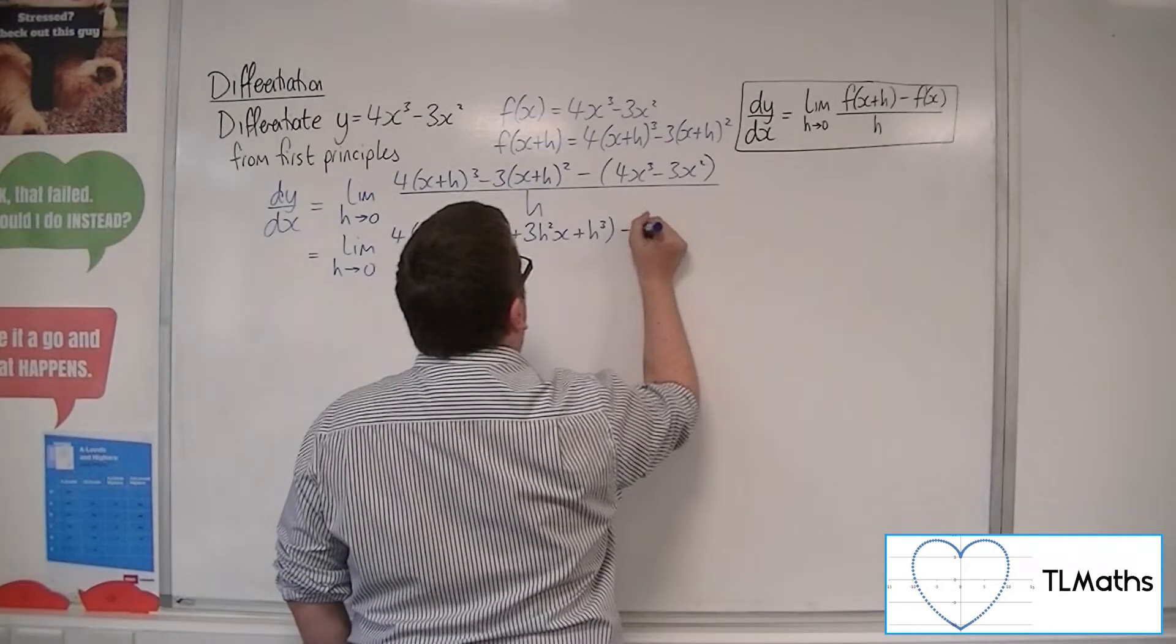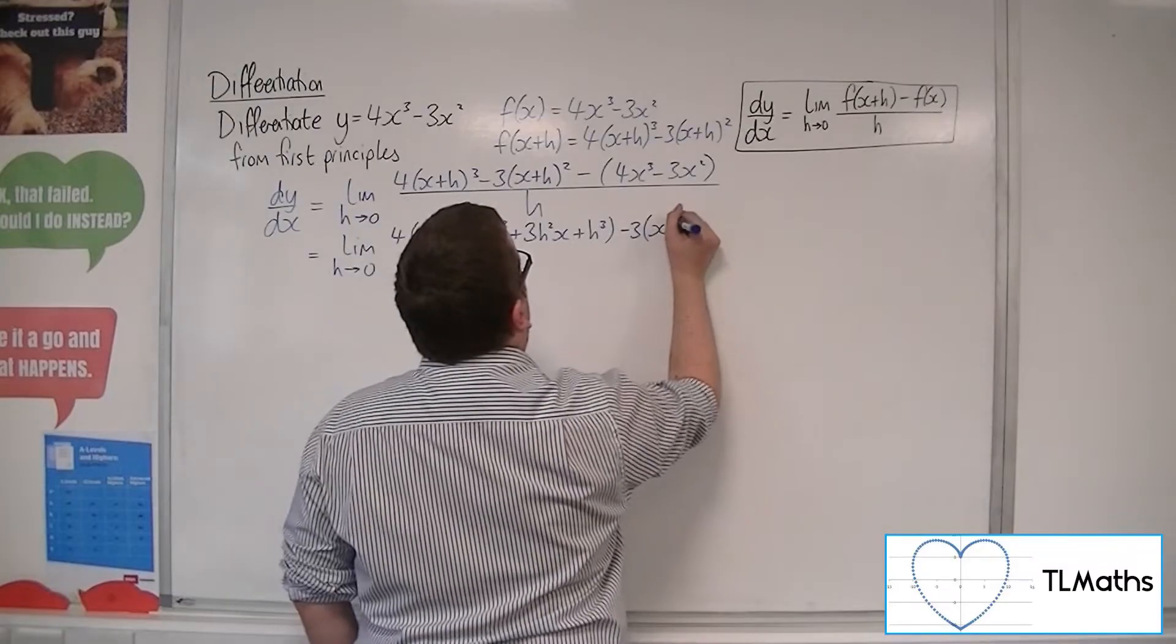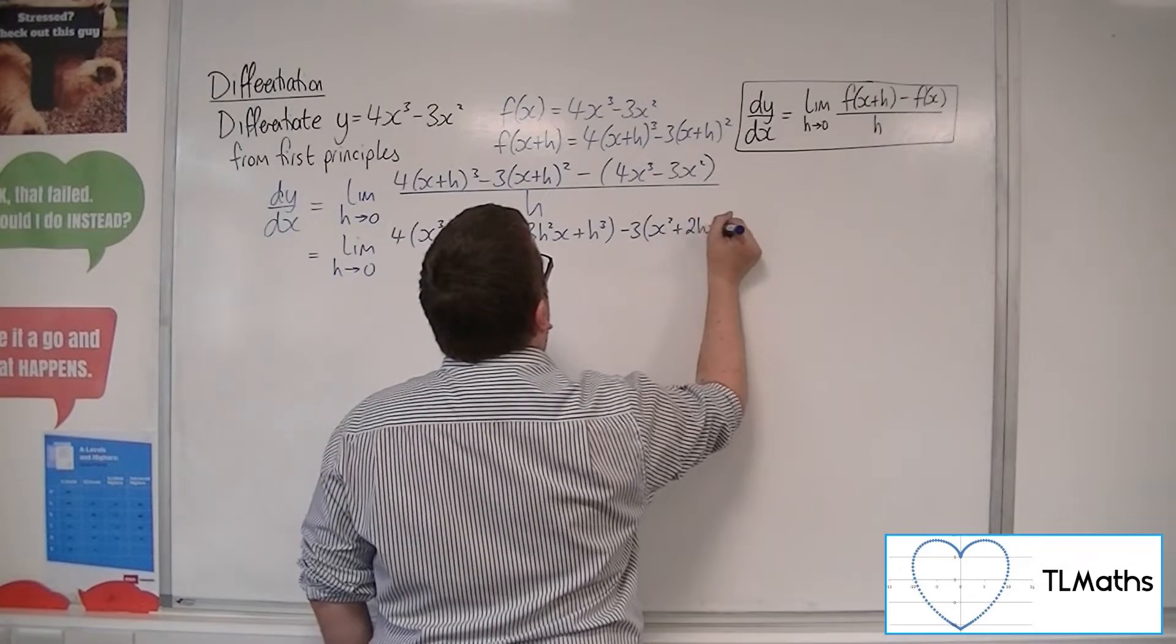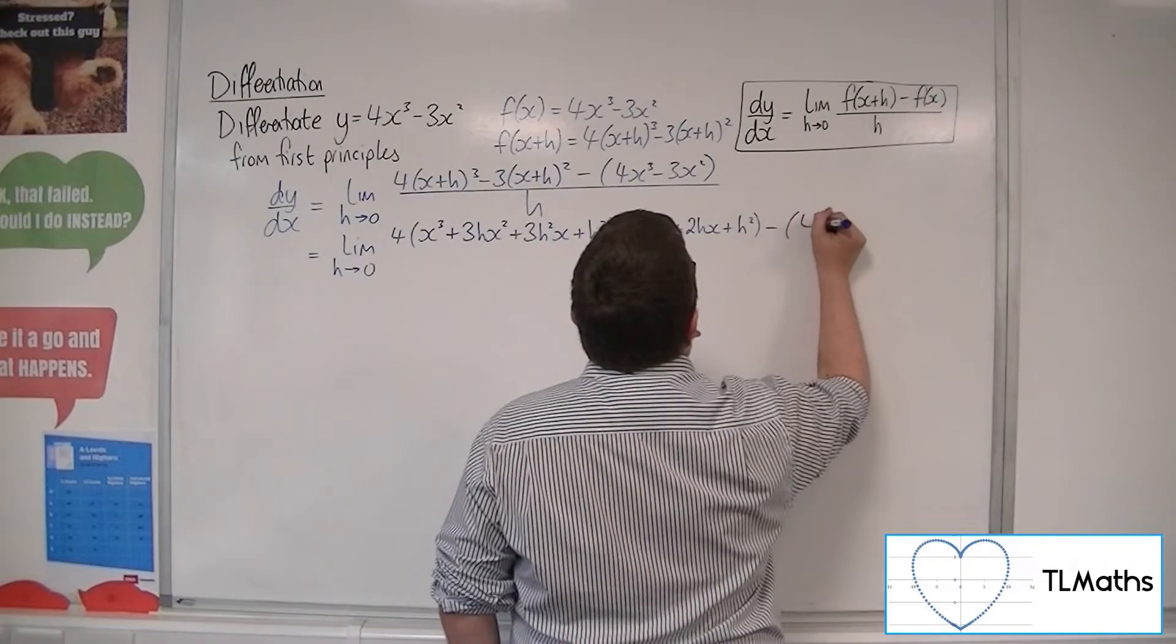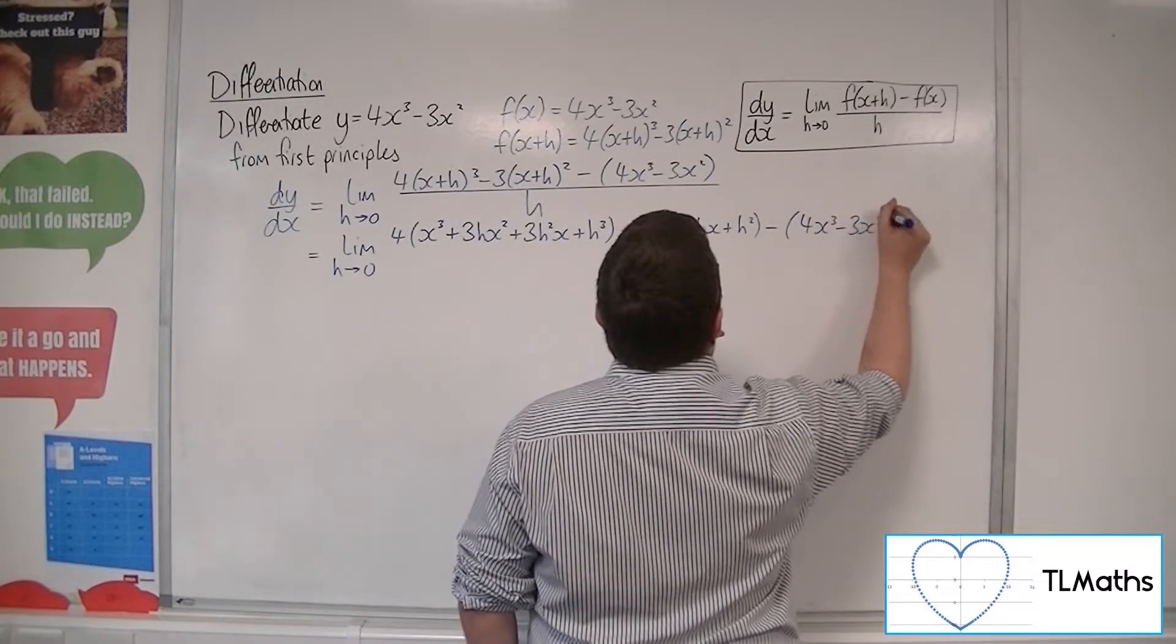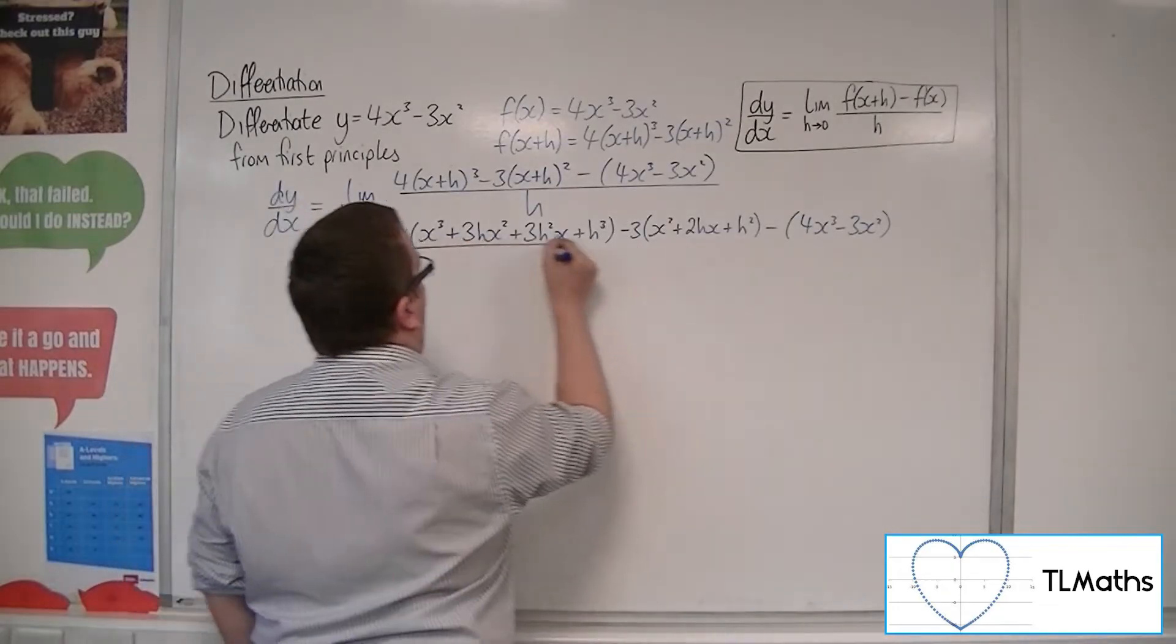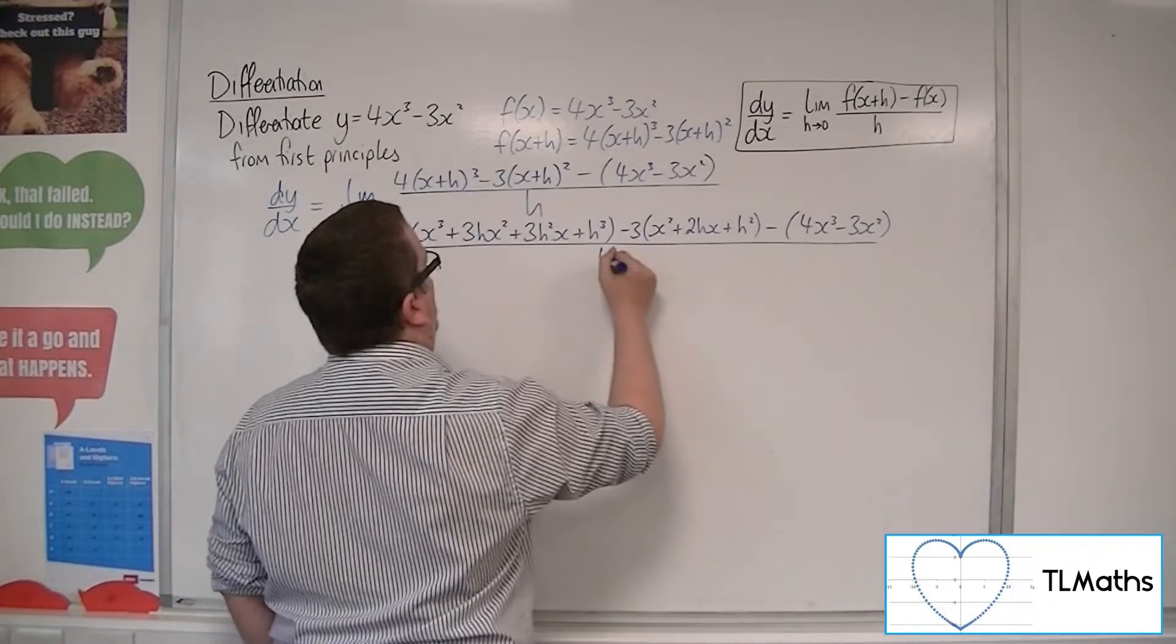Then we've got this expansion. So x squared plus 2hx plus h squared, and then we're taking away 4x cubed minus 3x squared, all over h.